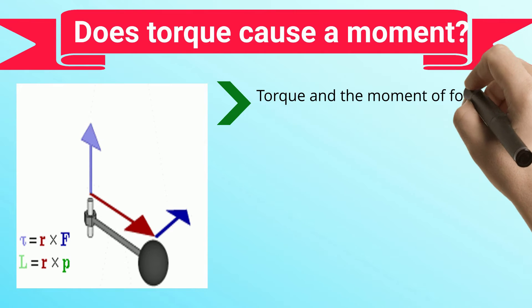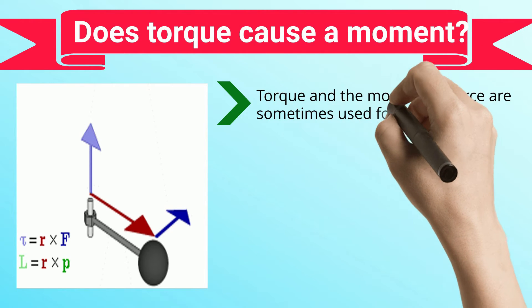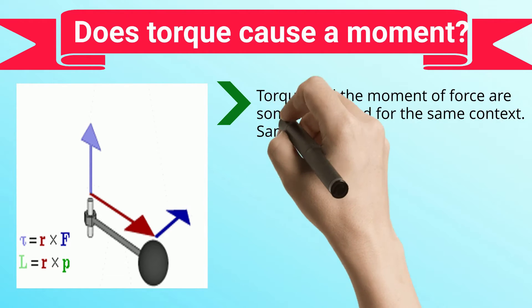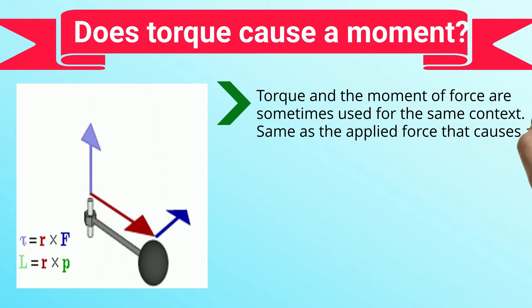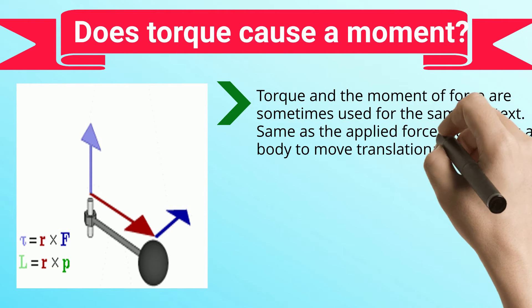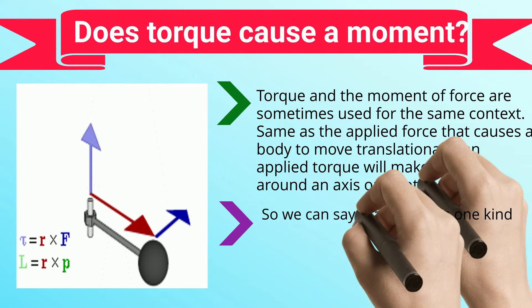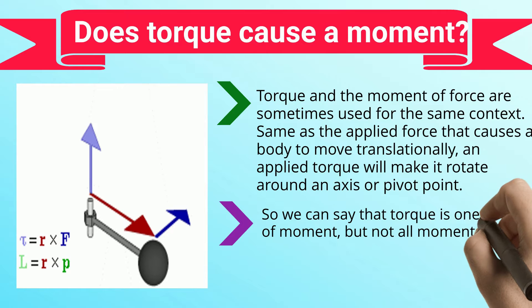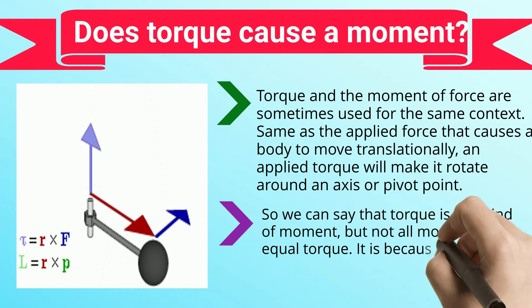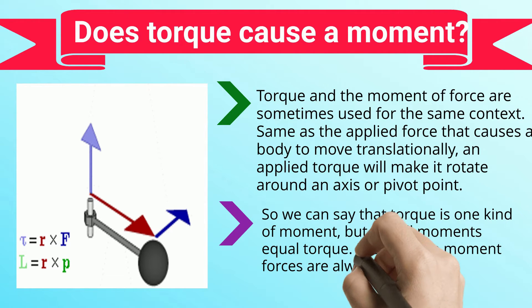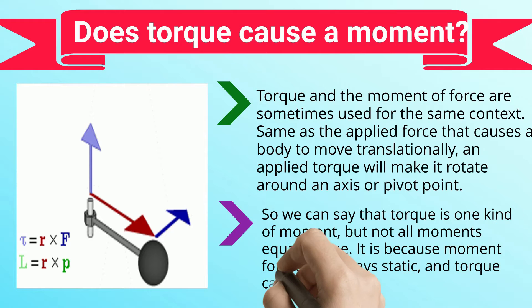Torque and the moment of force are sometimes used for the same context. Same as the applied force that causes a body to move translationally, an applied torque will make it rotate around an axis or pivot point. So we can say that torque is one kind of moment, but not all moments equal torque. It is because moment forces are always static, and torque can be either dynamic or static.